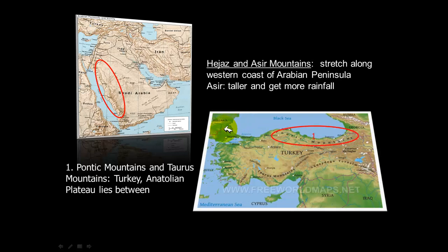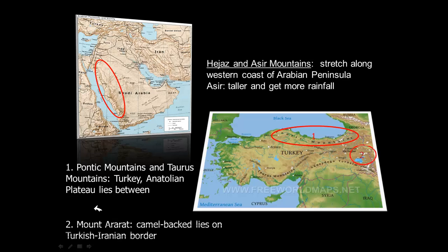The Pontic Mountains and the Taurus Mountains are located in Turkey, around the Anatolian Plateau. The second mountain range in Turkey is Mount Ararat, located on the Turkey-Iran border. So in Turkey we have the Pontic and Taurus Mountains in the north, and Mount Ararat on the eastern border with Iran.